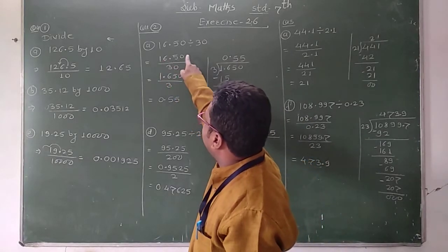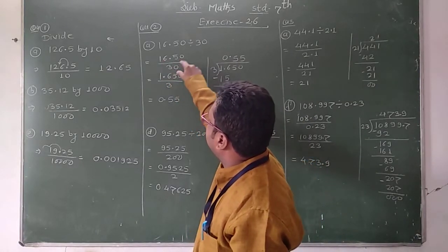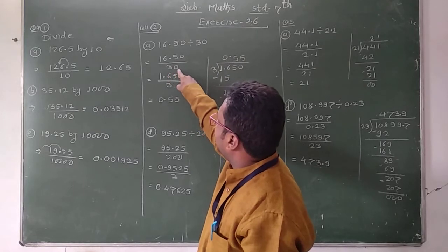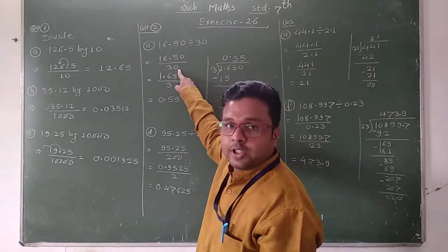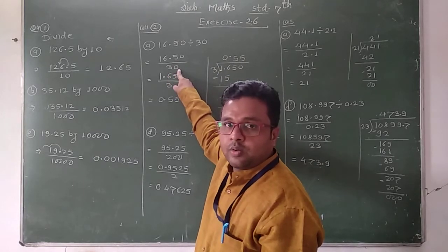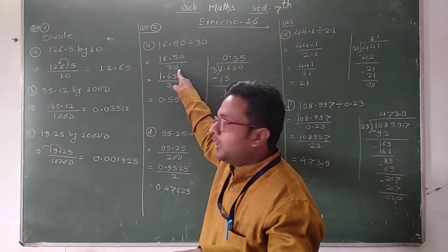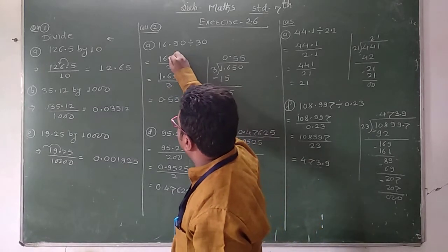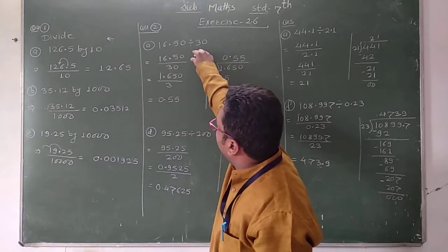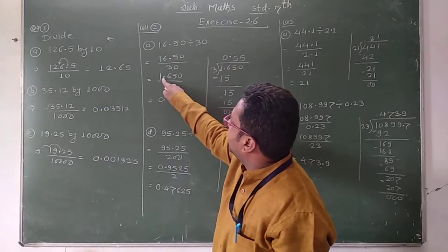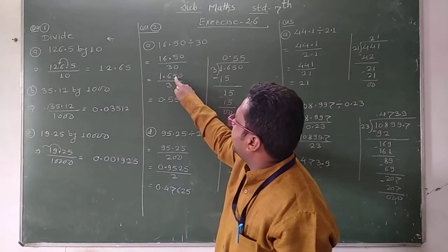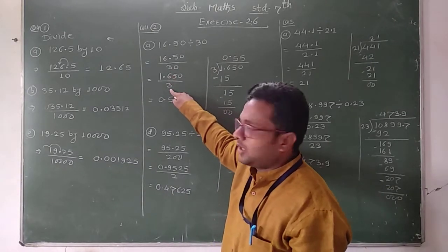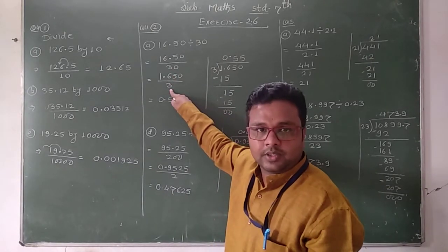We write 16.50 divided by 30. Now 3 is followed by how many zeros? One zero. This means it is divided by 10. Therefore we shift the decimal point one digit to the left in the numerator, then the numerator becomes 1.650, and what is remaining in the denominator is 3.